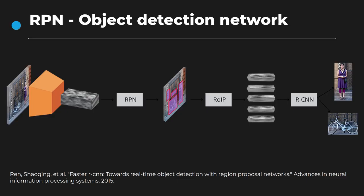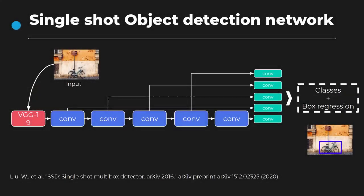From these candidate bounding boxes and the features extracted by the CNN network, a region-of-interest pooling network crops the patches to a fixed size to feed them to fully connected layers for localization and classification. This is the general idea behind region-proposal network approaches like Faster RCNN, which was one of the first end-to-end trainable models for object detection using only deep learning. However, models like Faster RCNN are computationally demanding due to the region-proposal network.